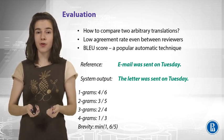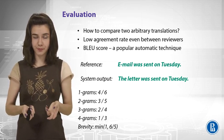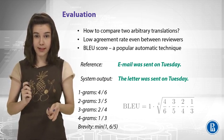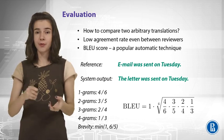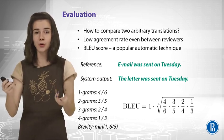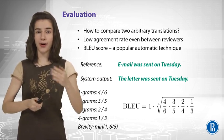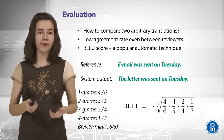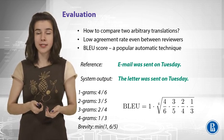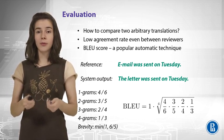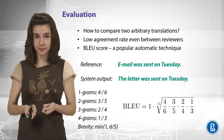How do we compute the BLEU score from these values? We take the geometric average of our unigram, bigram, trigram, and four-gram scores, and then multiply this average by the brevity penalty.